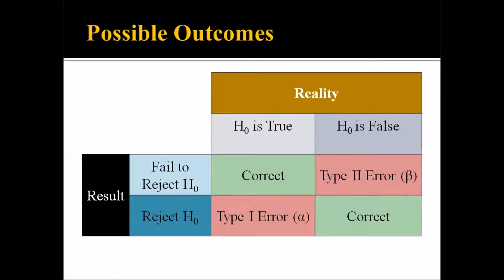If we move down to reject the null hypothesis — or accept the alternative hypothesis — and the null hypothesis is in fact true, that's a Type 1 error, also known as an alpha error. The risk of making this error is equivalent to alpha. So if our alpha is set at 0.05, there's a 5% chance that a Type 1 error will occur — a 5% chance that we'll reject the null hypothesis when in fact it was true.